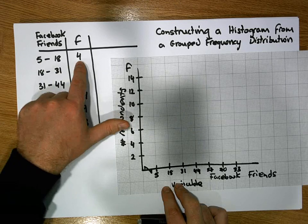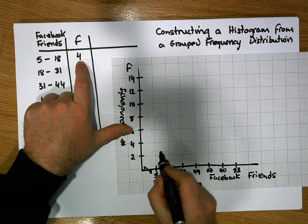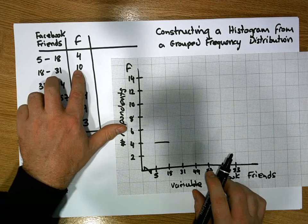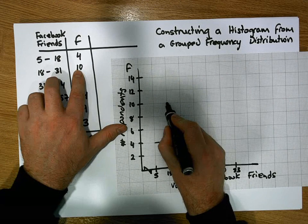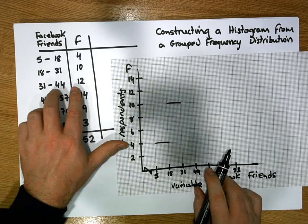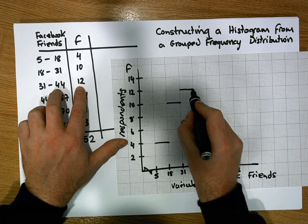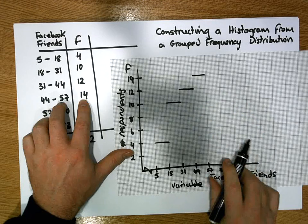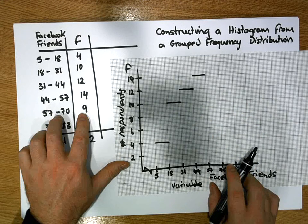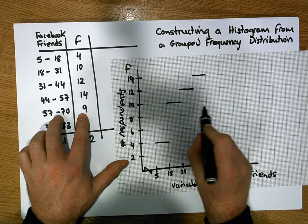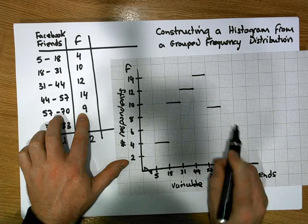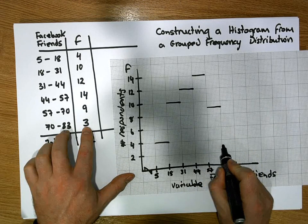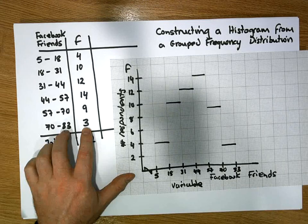So each class is going to have a height specified by its frequency. So between 5 and 18 we'll have a bar of height 4. Between 18 and 31 we'll have a bar of height 10. Between 31 and 44 we have a bar of height 12. Between 44 and 57 we have a bar of height 14. Between 57 and 70 we have a bar of height 9. And between 70 and 83 we have a bar of height 3.